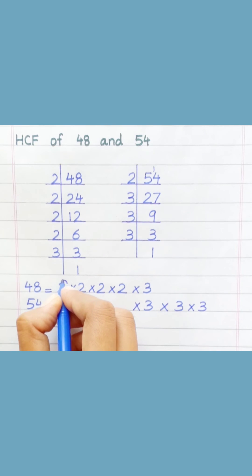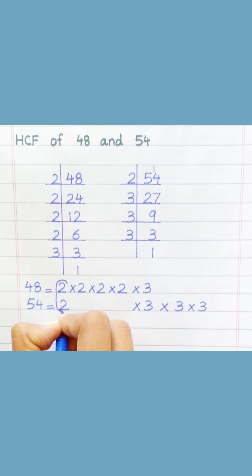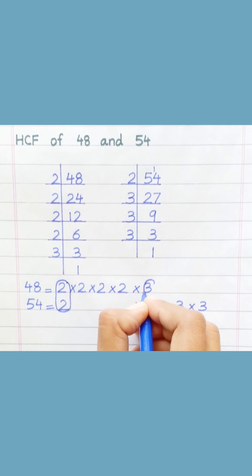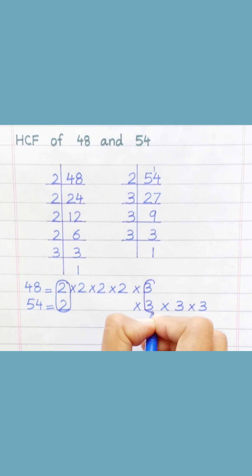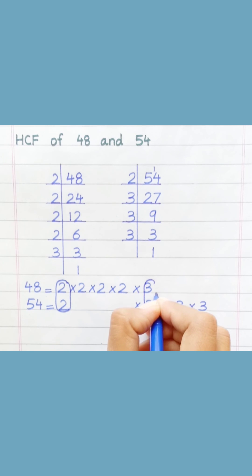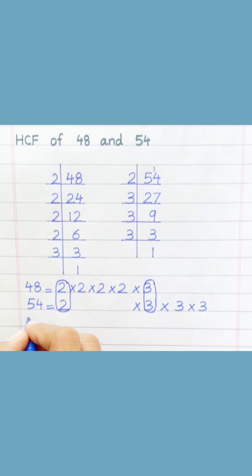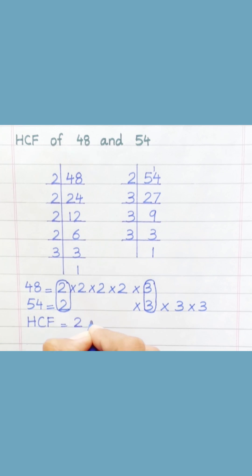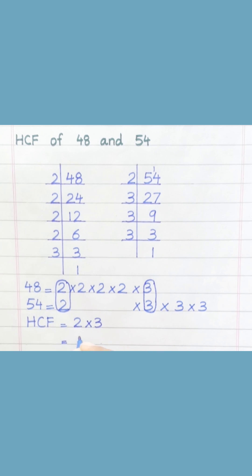Loop the common prime factors among both. HCF equals 2 multiply 3, equal 6.